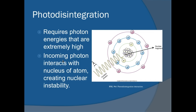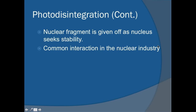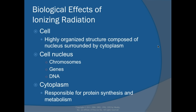Photodisintegration requires extremely high photon energies. The incoming photon interacts with the nucleus of an atom, creating nuclear instability. A nuclear fragment is given off as the nucleus seeks stability. This is a common interaction in the nuclear industry.